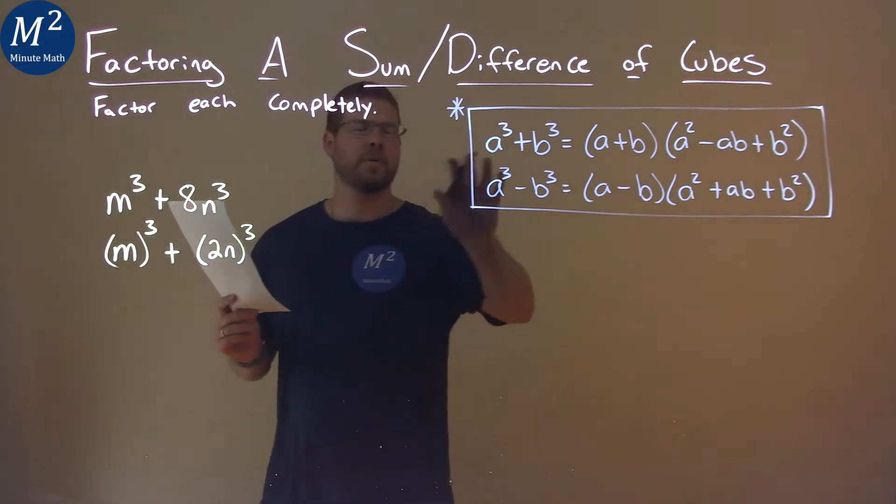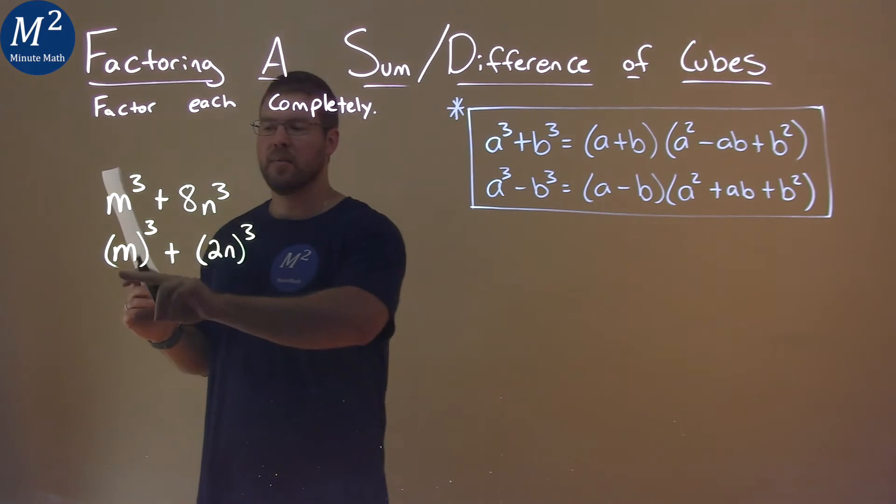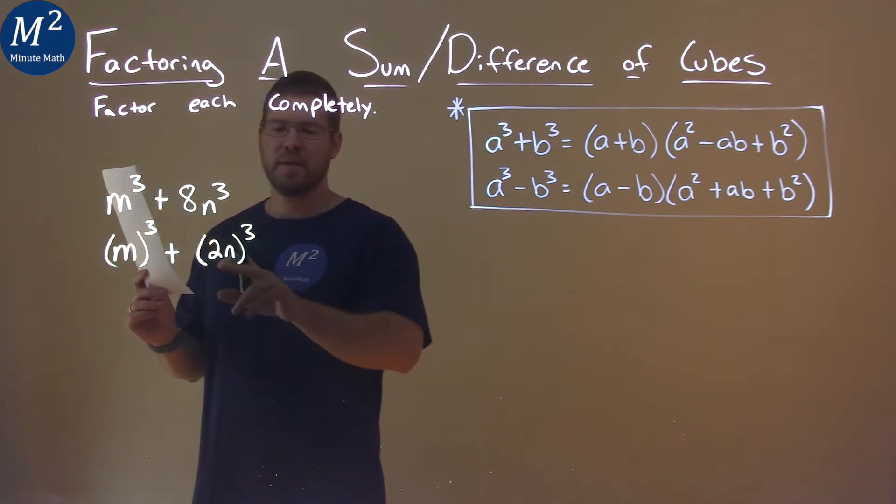But now we have our formula that matches up. We have a sum of two cubes and we can use the formula. a is going to be m and b is going to be equal to 2n.